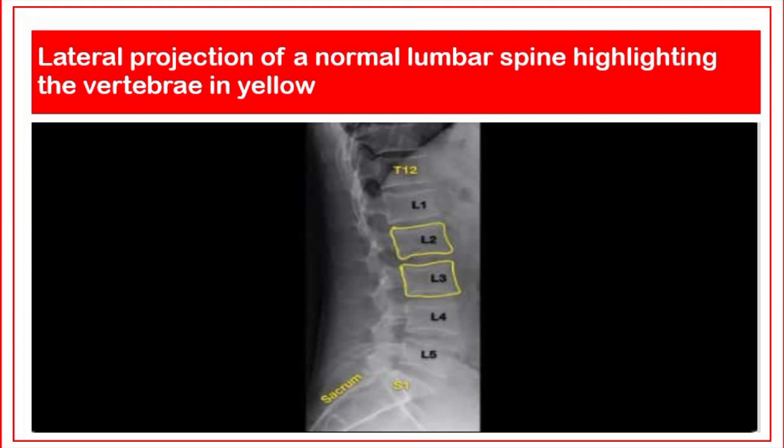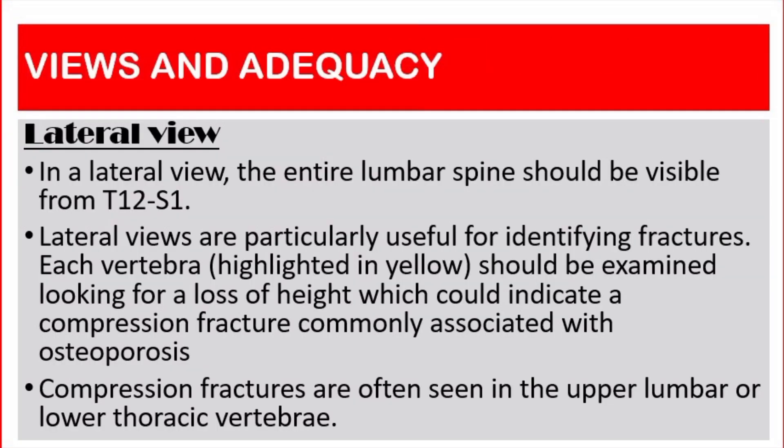In a lateral view, the entire lumbar spine should be visible from T12 to S1. Lateral views are particularly useful for identifying fractures. Each vertebra, highlighted in yellow, should be examined looking for a loss of height, which could indicate a compression fracture, commonly associated with osteoporosis. Compression fractures are often seen in the upper lumbar or lower thoracic vertebrae.